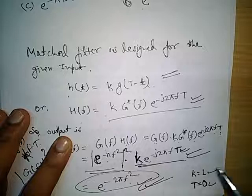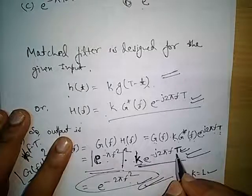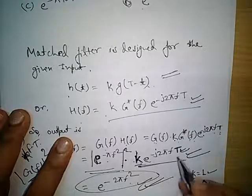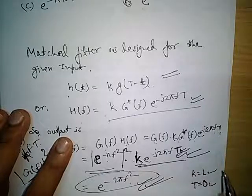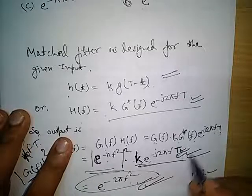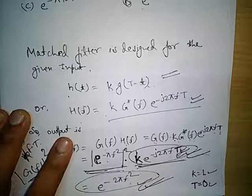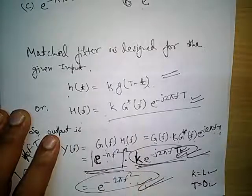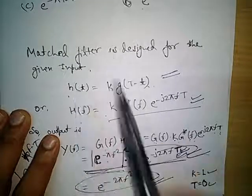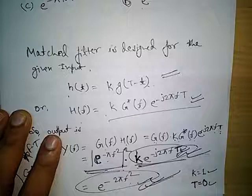We can also design another type of matched filter by taking some other value of T or k. We are free to take any value of k and any value of T, but there is a condition: to maximize the SNR we must take T as the duration of the finite signal. However, here we have an infinite signal, so we are not concerned about maximizing SNR and we eliminate those factors. The transfer function — or impulse response of the system — will still be matched to the input, which is why it is called the matched filter.